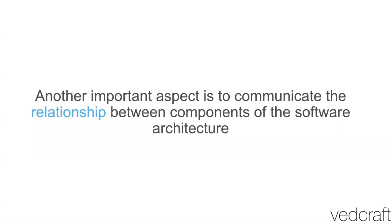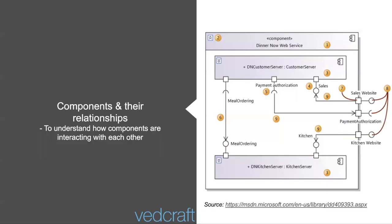Once you establish the fundamental organization, the next component is the relationship between those components. Looking at this sample diagram from Microsoft, it's more like a collaboration or sequence diagram, but the key part is it demonstrates how components are talking to each other — how the sales website is receiving the order, how the payment is getting processed, how the kitchen is getting the order. The entire flow of events is a kind of orchestration of relationships, and that's what you depict through software architecture.